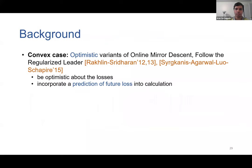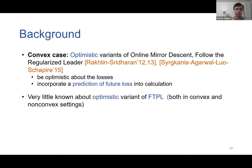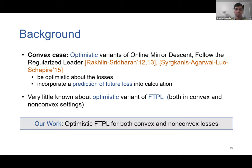There has been some work on online learning with predictable losses. When loss functions are convex, optimistic variants of online mirror descent and follow the regularized leader have been studied. These methods try to be optimistic about the loss sequence by incorporating a prediction of the future loss into the next decision. However, we are more interested in FTPL and optimistic variants of FTPL. Unfortunately, there is very little work on optimistic variants of FTPL in both convex and non-convex settings. In our work, we study an optimistic variant of FTPL and show it achieves better regret guarantees.